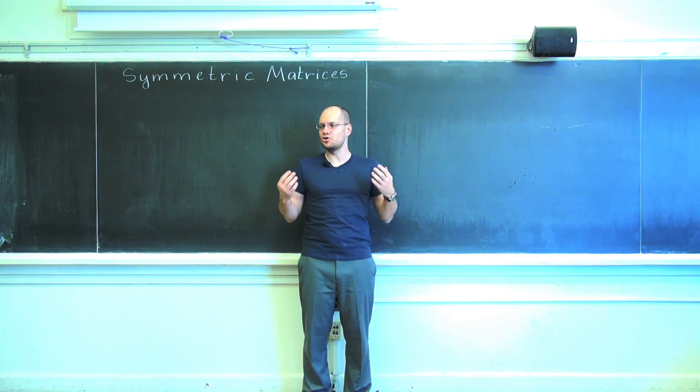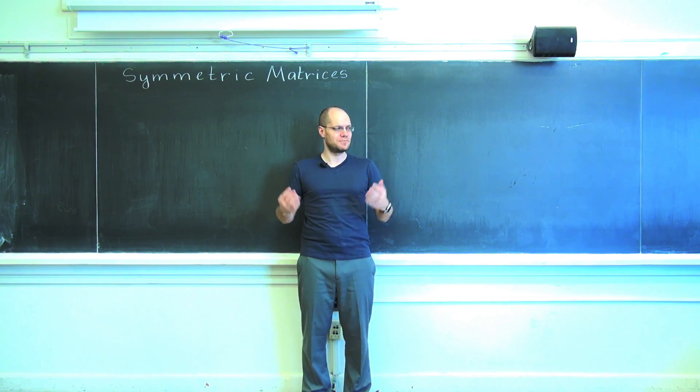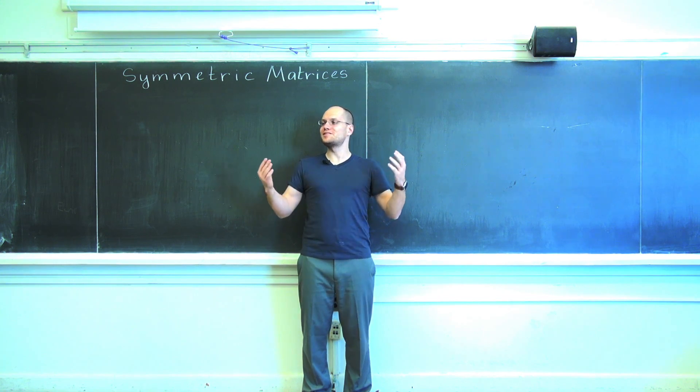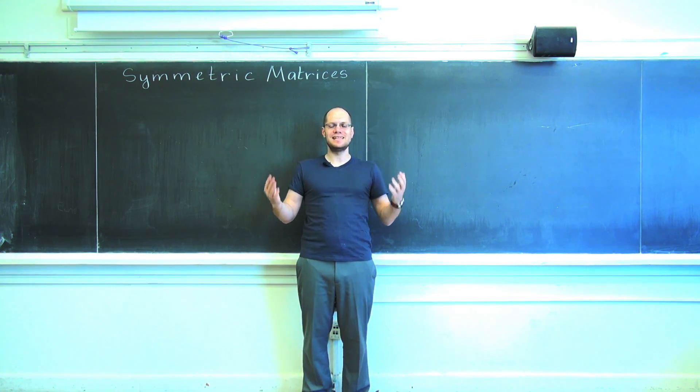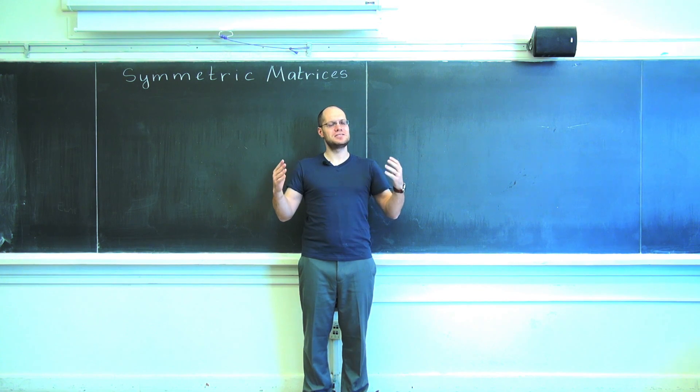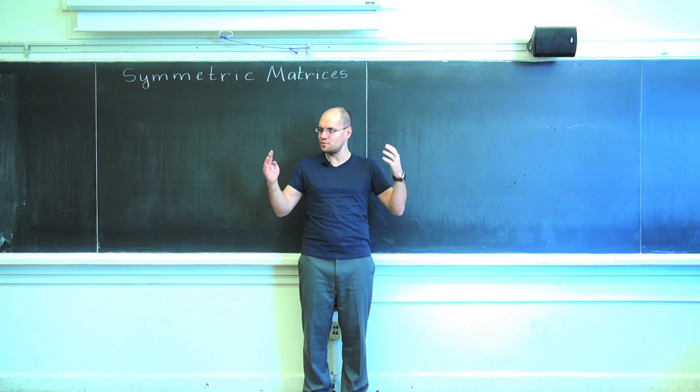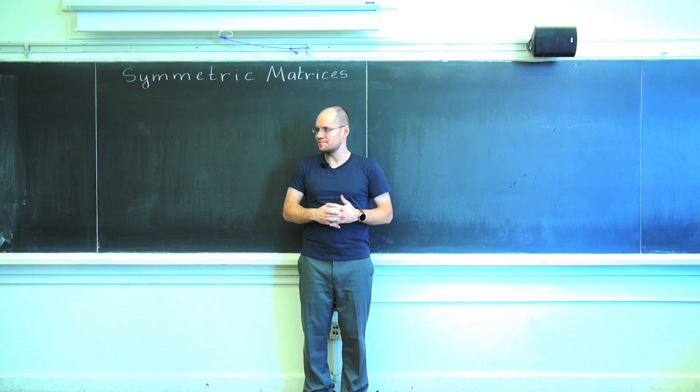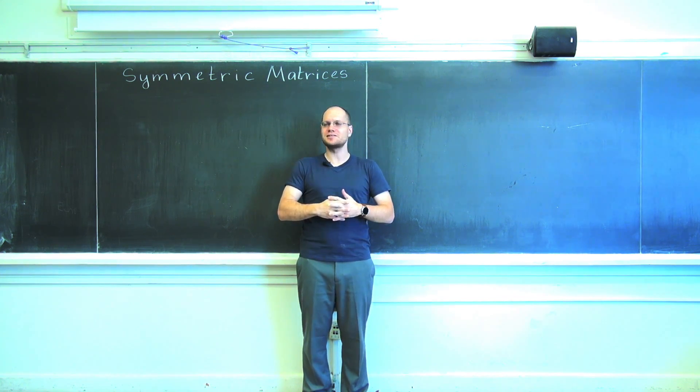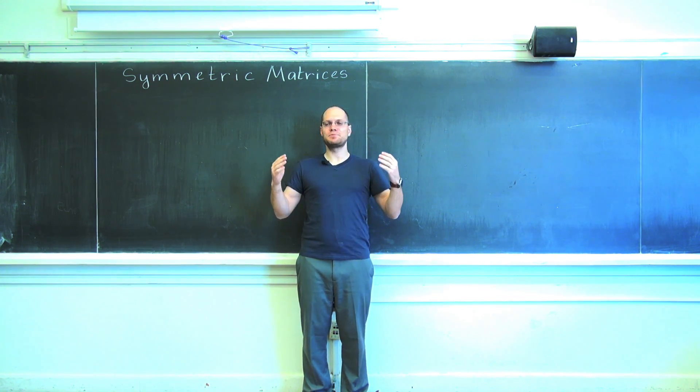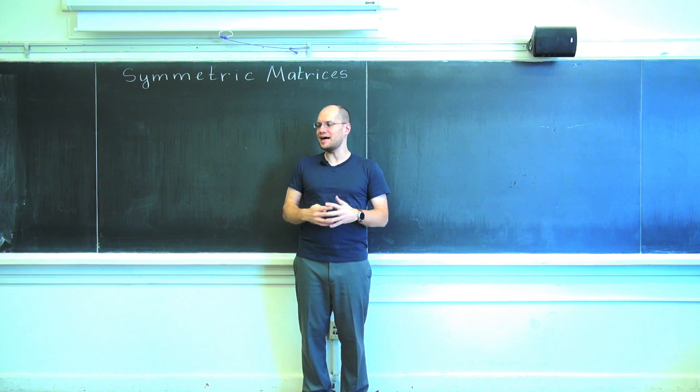These are the two things that can go quote-unquote wrong with arbitrary matrices. Well with symmetric matrices, this is not possible. There is a relatively simple theorem whose proof we'll omit for now. We'll come back to it later that states that if a matrix is symmetric, it has precisely n real eigenvalues.